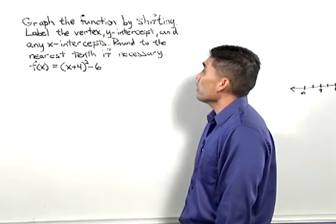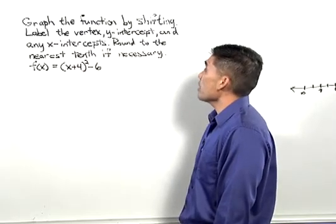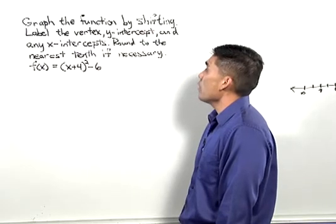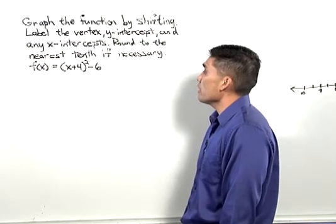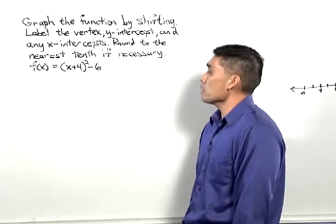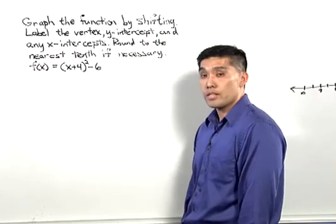Graph the function by shifting. Label the vertex, y-intercept, and any x-intercepts, and round to the nearest tenth if necessary. The function f of x equals the quantity x plus 4 squared minus 6.